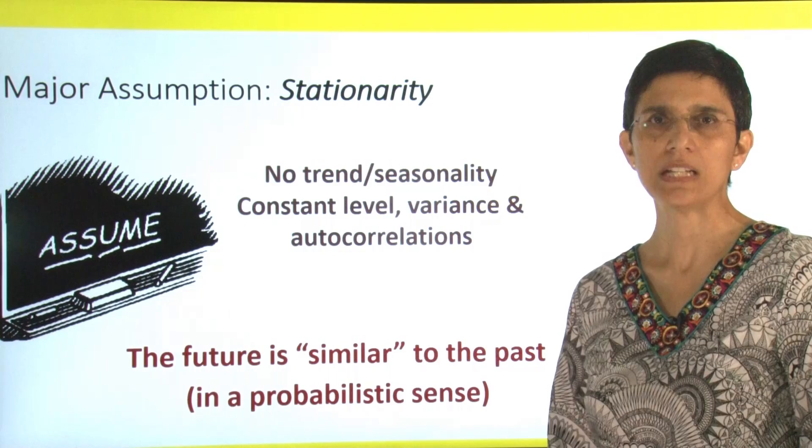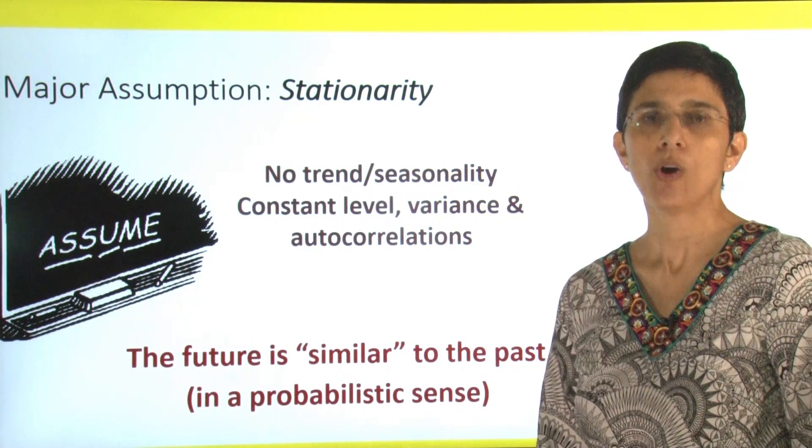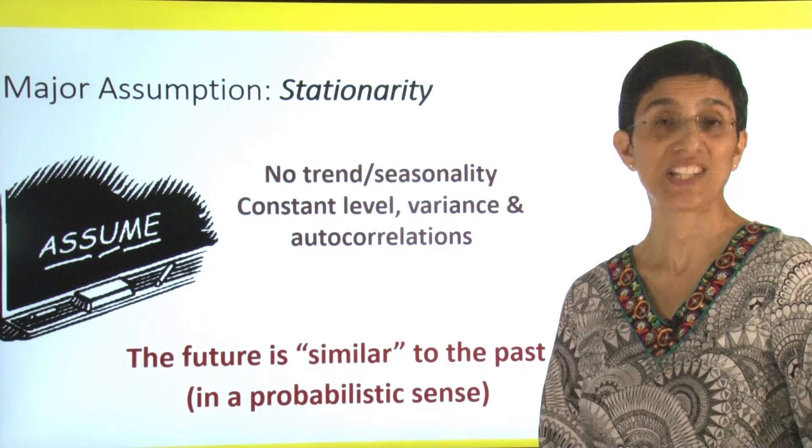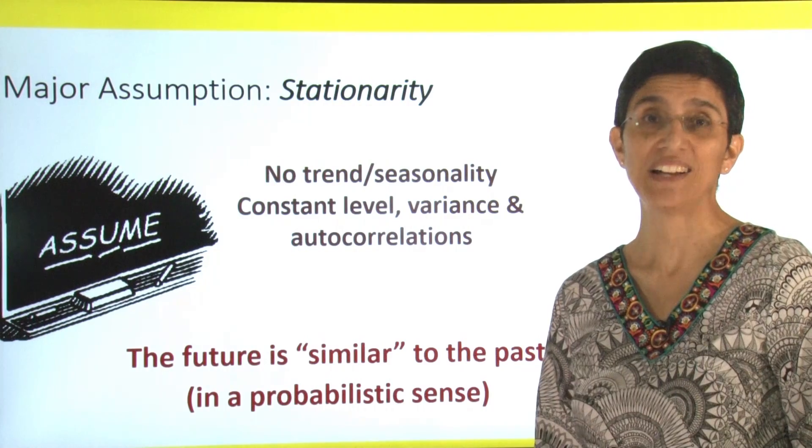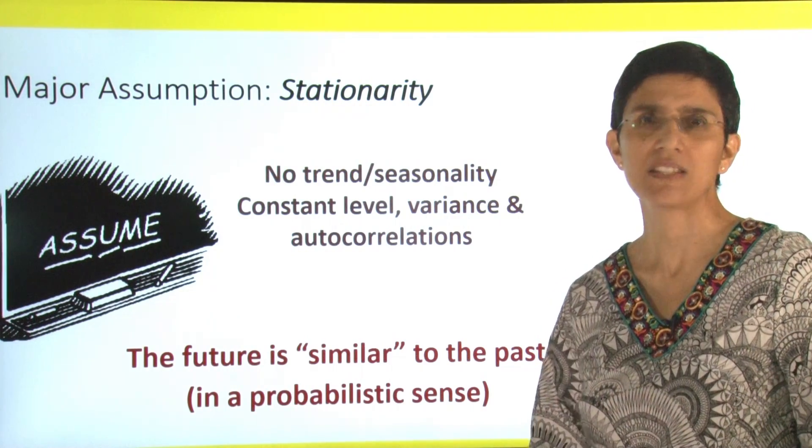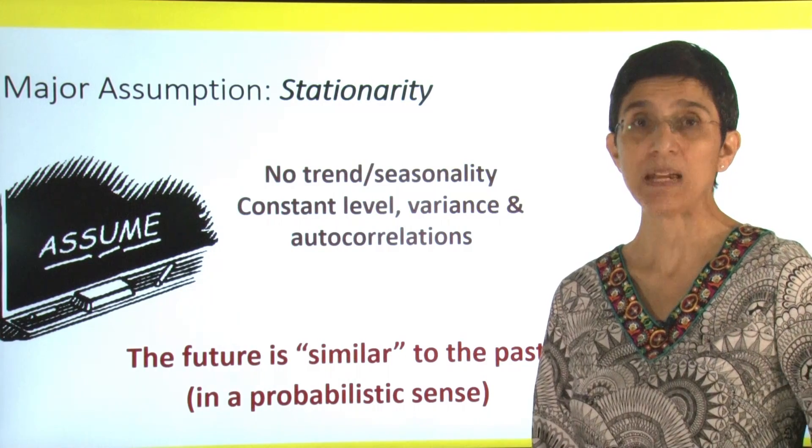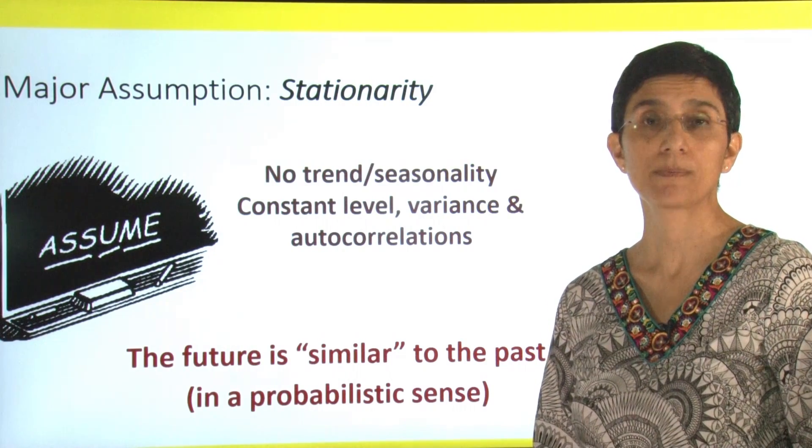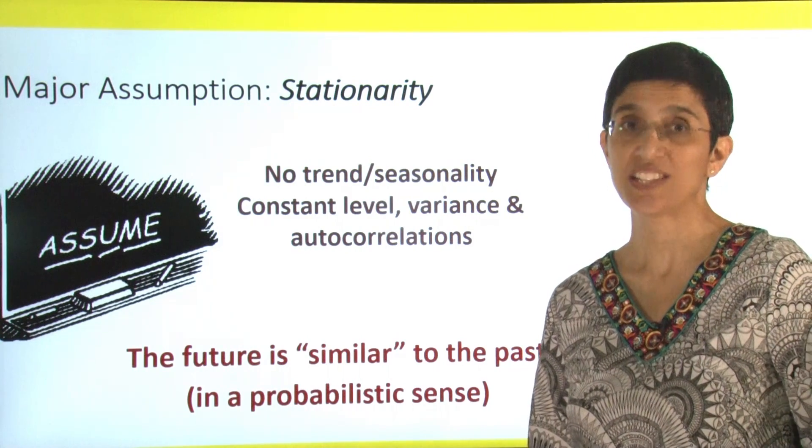The major assumption in autoregressive models is something called stationarity. We want to assume that our series is stationary. It's not going anywhere. It means there's no trend, there's no seasonality, the level is going to be constant, and this autocorrelation that we talked about will be the same throughout the entire series. So remember that whenever we're using an AR model, this is the assumption underlying.